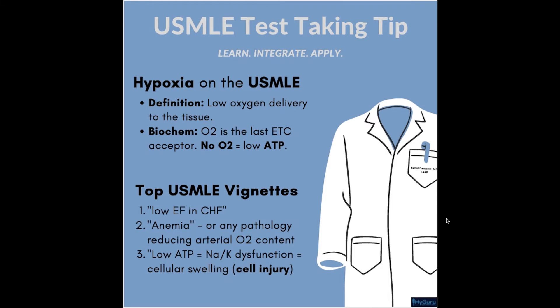Remember that oxygen is the last electron transport chain acceptor. So if you are going to have no oxygen, you're going to have low ATP. The only ATP that you'll have are those coming from minor cell processes like glycolysis. No oxygen also means they can sneak in a question for lactic acidosis, which causes an anion gap metabolic acidosis, and they can give you the lab values and electrolytes that suggest that.